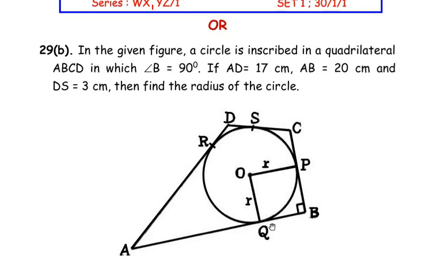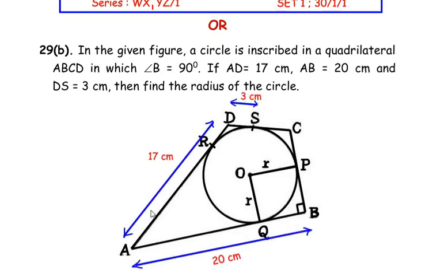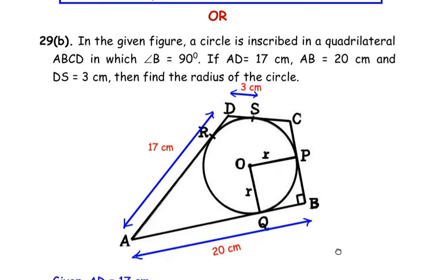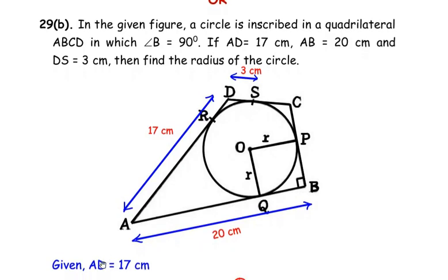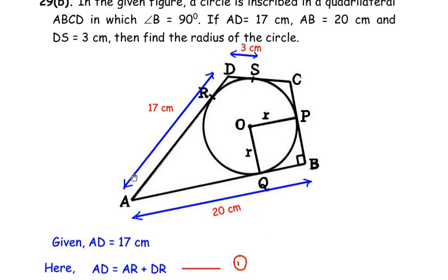The side lengths are given, so let us begin by highlighting them. We have highlighted the given side lengths. Now let us write the side length AD. AD is 17 cm, and we can see that AD is made up of AR and DR. So we write AD = AR + DR. Let us take this as equation 1.